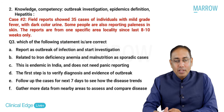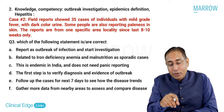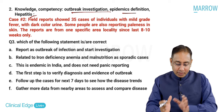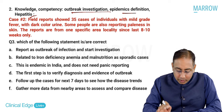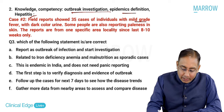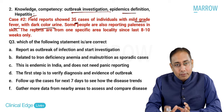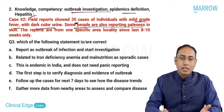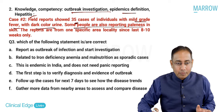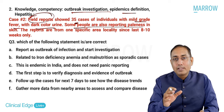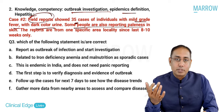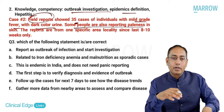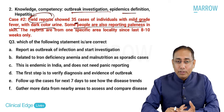Moving to case number two. The competency and knowledge component is about outbreak investigations, epidemic definitions, and hepatitis. Case number two: field reports showed 35 cases of individuals with mild grade fever and dark colored urine. Some people also reported paleness in the skin. The reports are only from one specific area locality since last 10 weeks only. Field reports mean directly from ASHA workers, Anganwadi workers, or the subcentre.